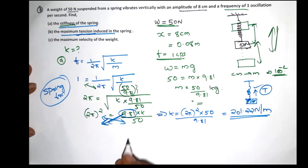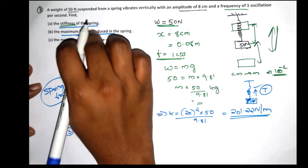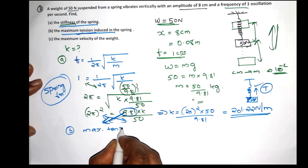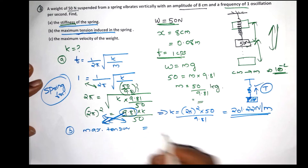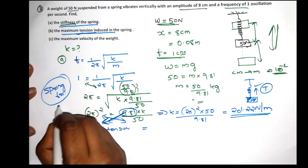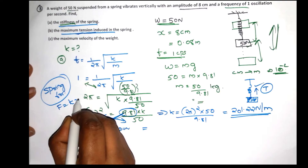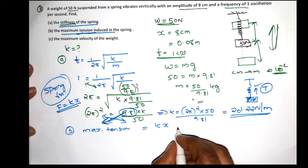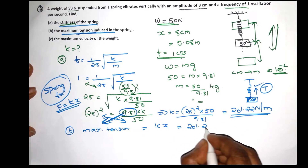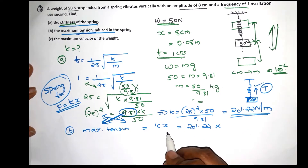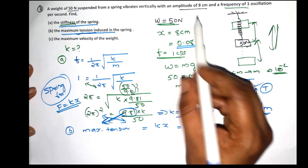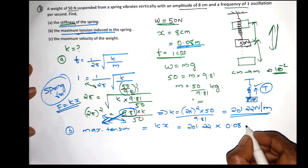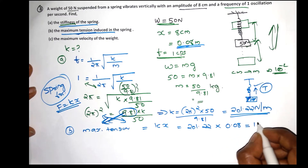Maximum tension equals spring force, given by the equation F equals k times x. Substituting k equals 201.22 and x equals the amplitude of 0.08 meters, the maximum tension works out to 16.1 newtons.